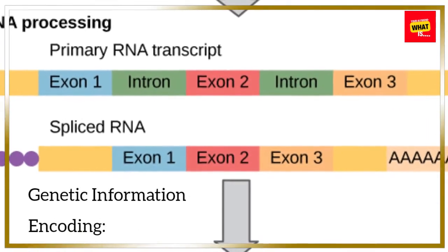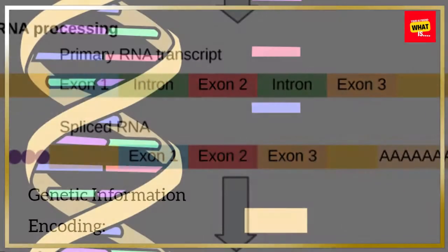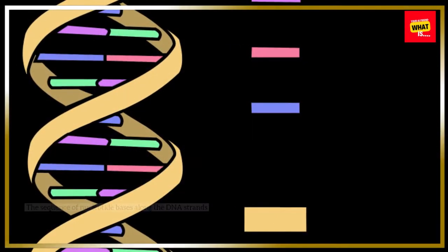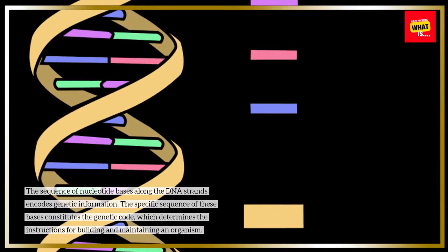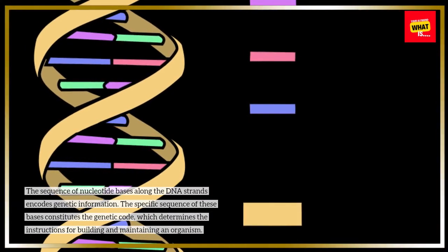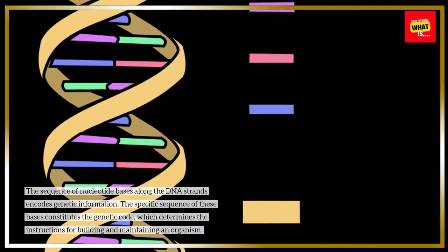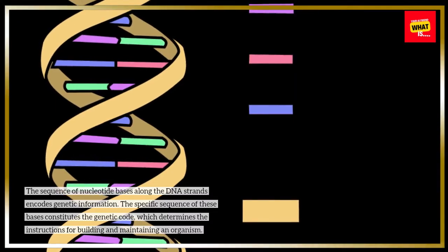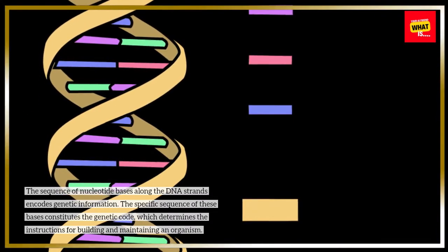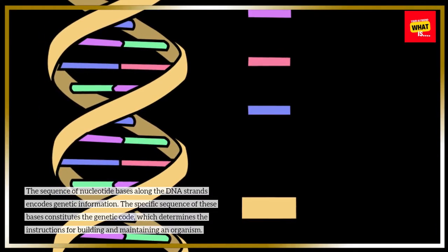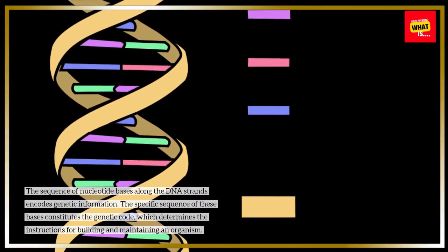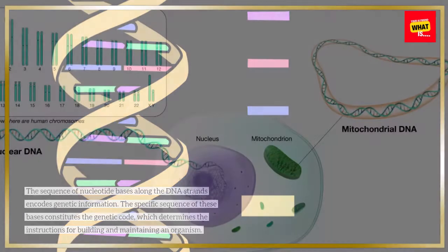Genetic information encoding: the sequence of nucleotide bases along the DNA strands encodes genetic information. The specific sequence of these bases constitutes the genetic code, which determines the instructions for building and maintaining an organism.